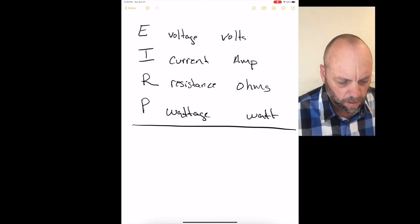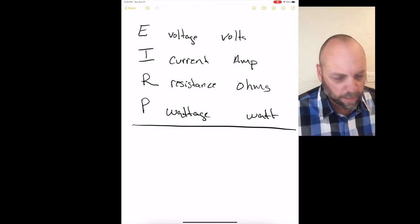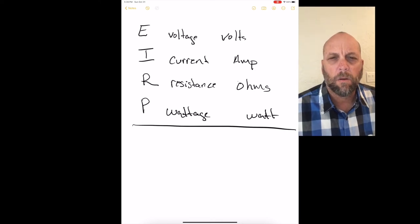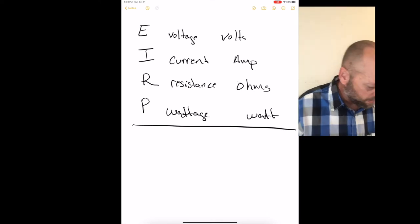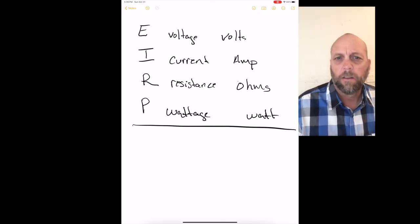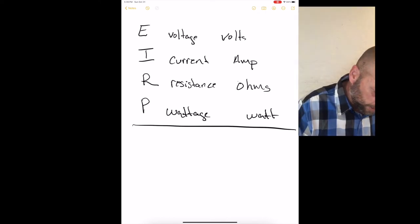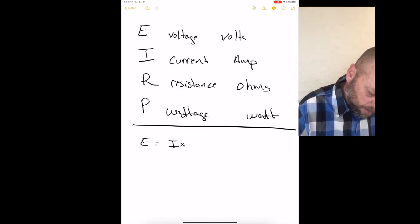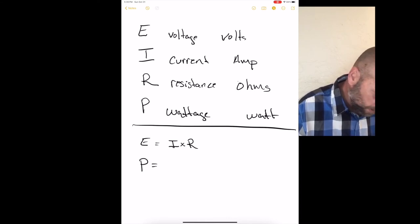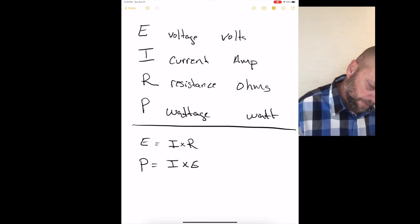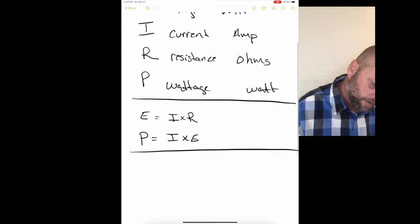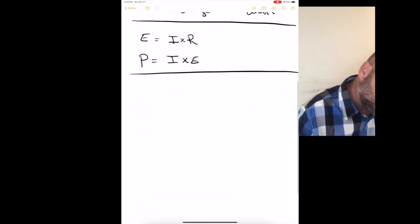So with these four letters for identifications in the Ohm's law, we can figure out the two basic formulas that they're always asking: E equals I times R, or P equals I times E. So we have that coming from here. We'll go up and we'll start building our triangle.